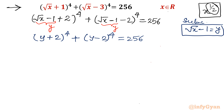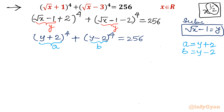Now let y + 2 = a and y - 2 = b. I just want to reduce the calculation — writing y + 2 whole square again and again would be complicated. So our equation is now a⁴ + b⁴ = 256.